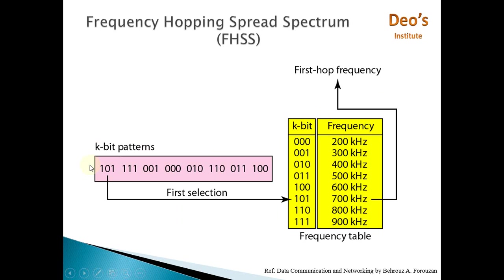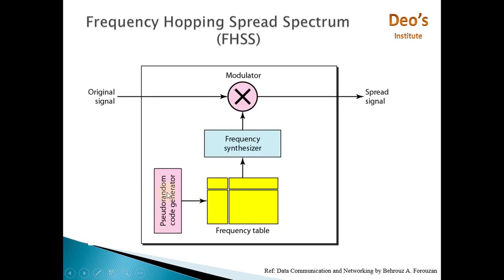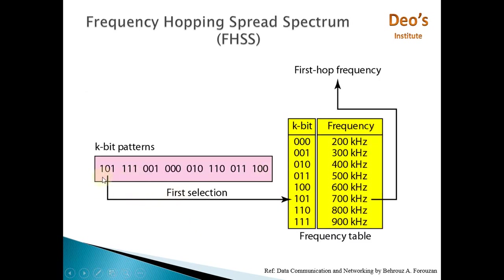Let's see this with an example. Consider these are numbers generated by the pseudorandom generator. For the first time, the pseudorandom number generated is 101, and for 101 the frequency is 700 kHz. So at time T1, data will be modulated with carrier frequency 700 kHz. At time T2, data will be modulated with 900 kHz. At time T3, data will be modulated with 300 kHz. And lastly, data will be modulated with 600 kHz. So every time, every cycle, the carrier frequency changes, and this results in a change in the bandwidth of the data to be transferred.